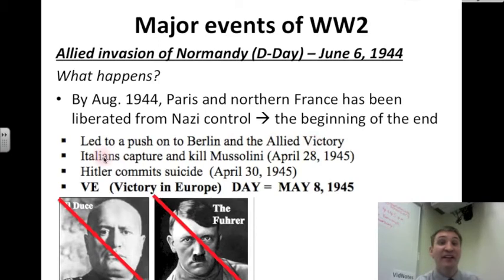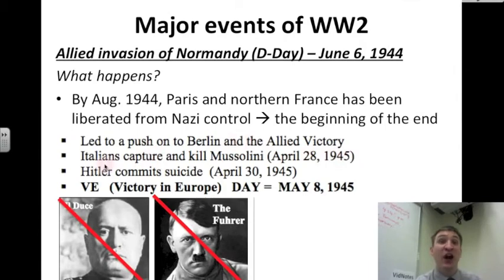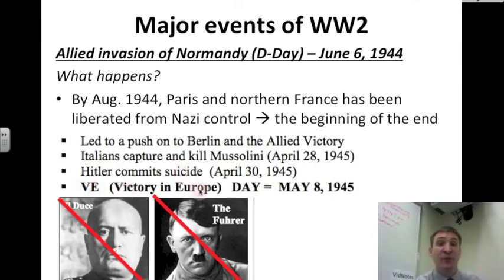The Italians capture and kill Mussolini on April 28th, 1945. Two days later, Adolf Hitler commits suicide in a bunker in Berlin. And after that, VE Day — Victory in Europe Day — is declared on May 8th, 1945. So Mussolini and Hitler no longer exist.